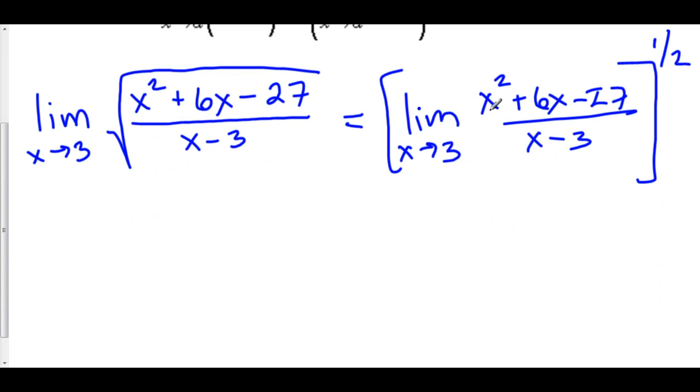If you plug in 3, here we have 3 squared is 9 plus 6 times 3, 9 plus 18 is 27, minus 27 is 0 over 0. So that's not going to work. Well, let's try step 2, algebra gymnastics.